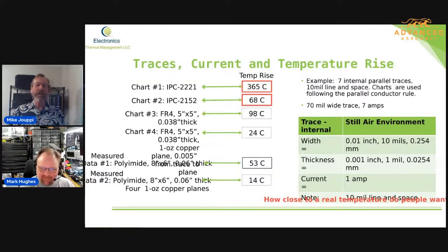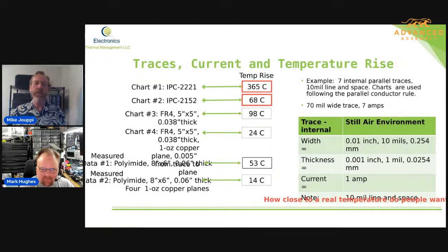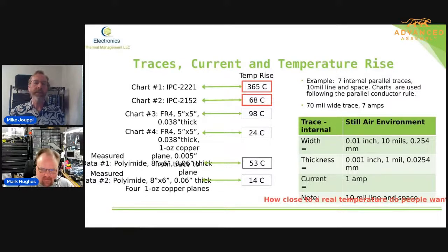So we'll step on through. We've got seven traces represented by one 70-mil trace at seven amps. And if you were going to IPC-2152 and size it, you'd get a 68-degree C rise.